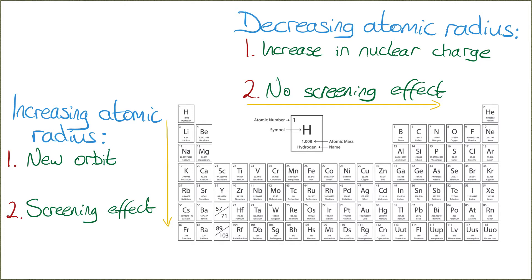Another reason why atoms get bigger going down the group is because of something called the screening effect. The screening effect is essentially the innermost electrons shielding the nuclear charge from the outermost electrons, meaning the outermost electrons are relatively unaffected by the nuclear charge. This explains why, even though there is an increase in nuclear charge going down a group, the atomic radius increases going down the group. There is no increase in the screening effect going across a period.